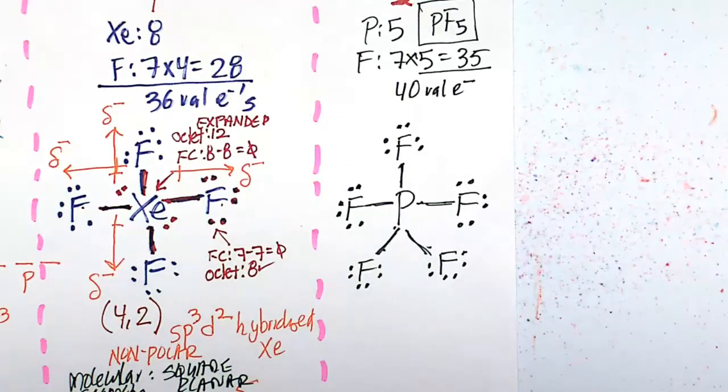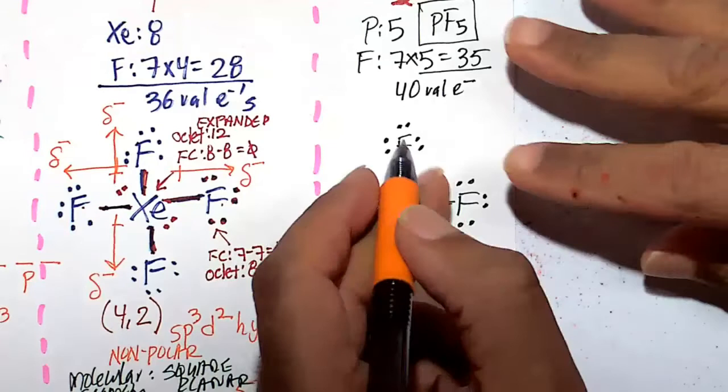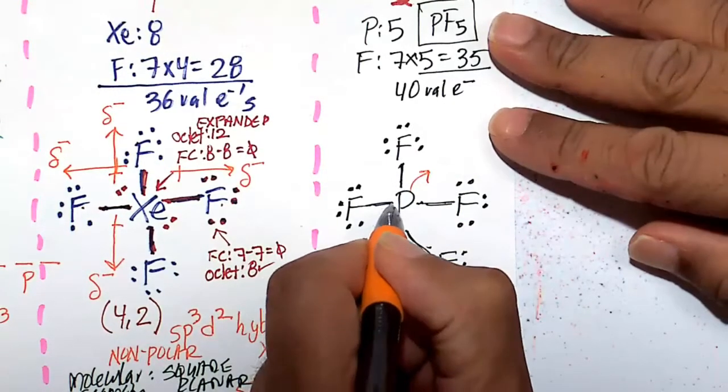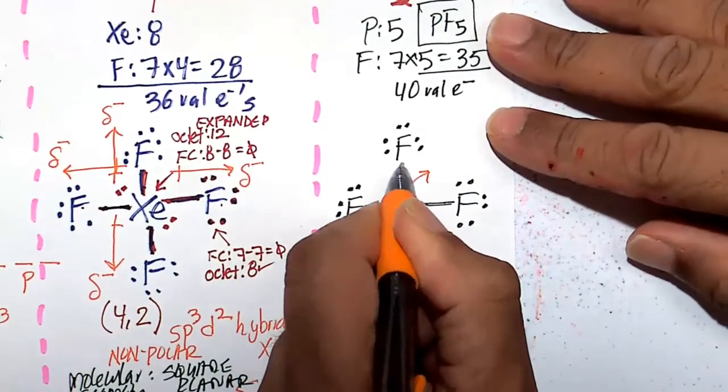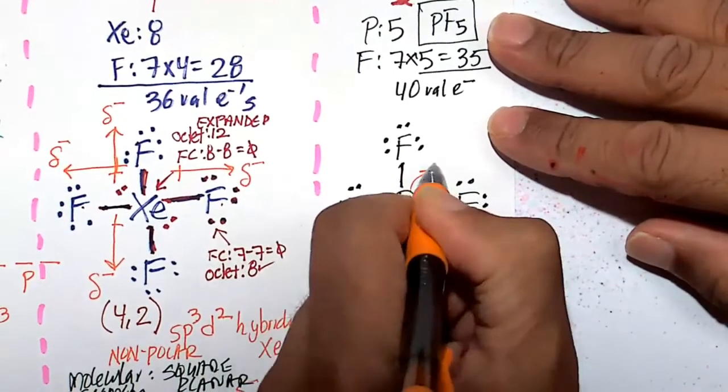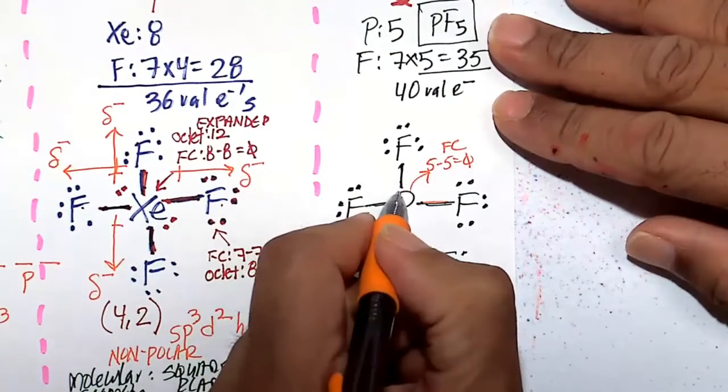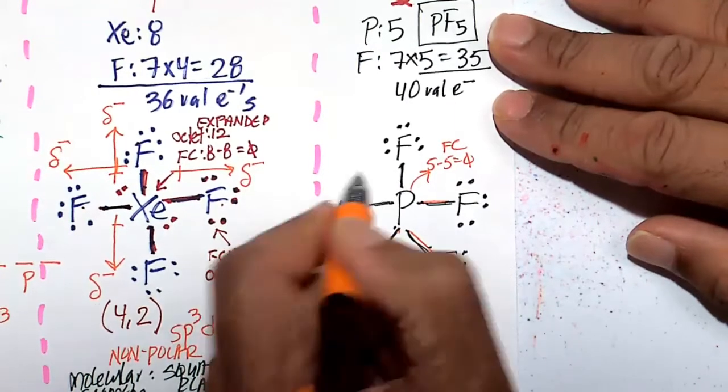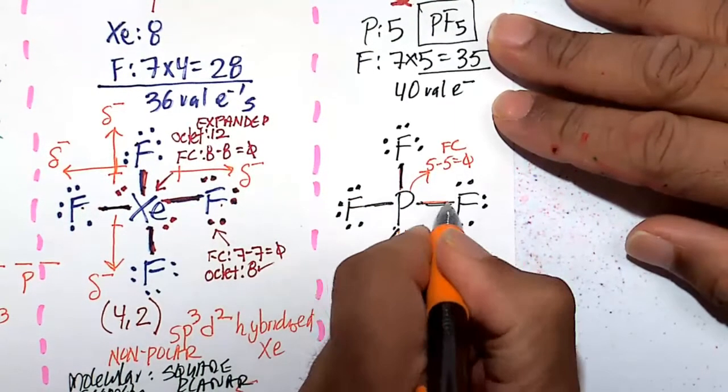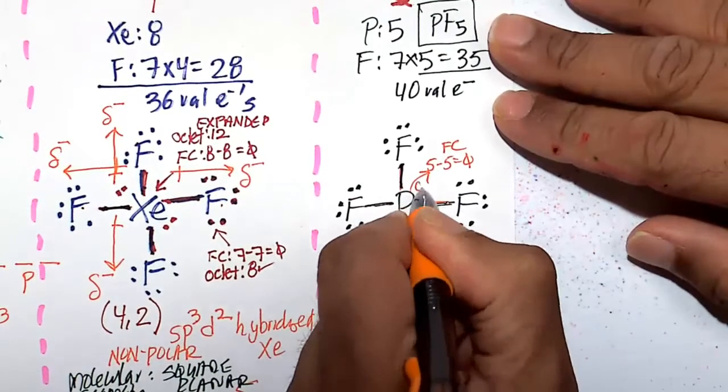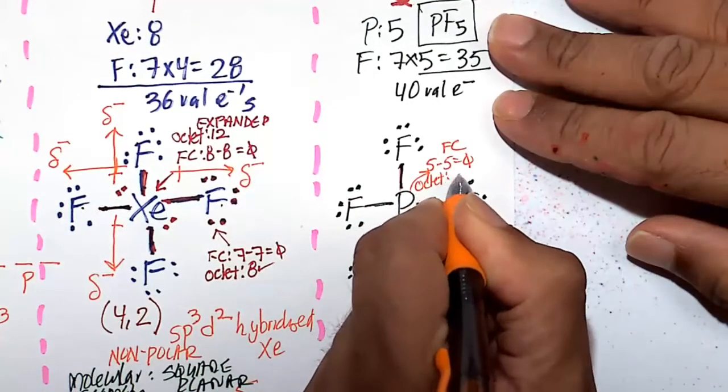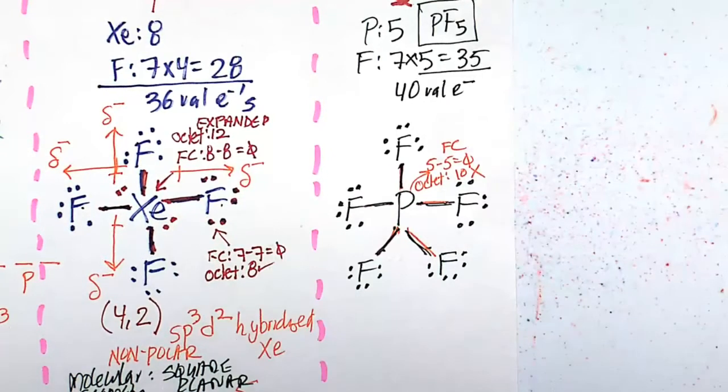So let's look at our formal charge and octet rule. Formal charge for this phosphorus, count with me, 1, 2, 3, 4, 5. Phosphorus is happy at 5. 5 minus 5 is 0 for the formal charge. What about the octet rule? Here you count everything as 1. 1, 2, 3, 4, 5, 6, 7, 8, 9, 10. So the octet rule for phosphorus is going to be 10. That's what we call an expanded octet. So no need to worry. An expanded octet is fine for phosphorus simply because of the fact we've got a minimized formal charge of 0.